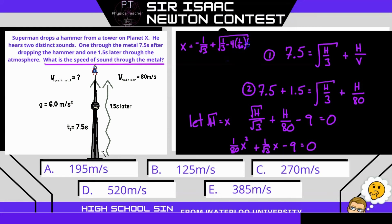which is 1 over 80, times c, which is negative 9, all divided by 2a, which is 2 times 1 over 80. And if we put that into our calculators, we get 12.31. That is x, which is also the square root of h. So if we square both sides, we can get h to be equal to 151.5 meters.